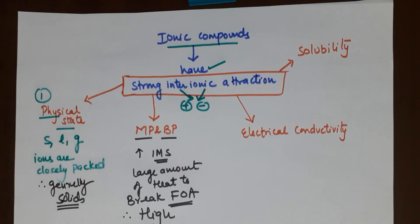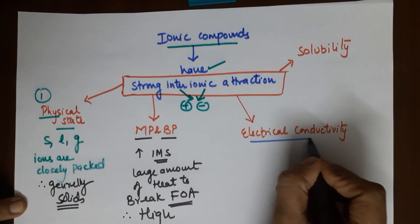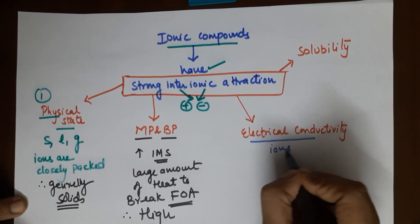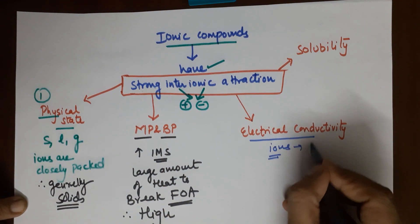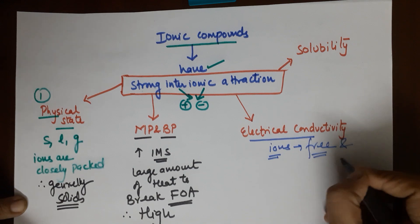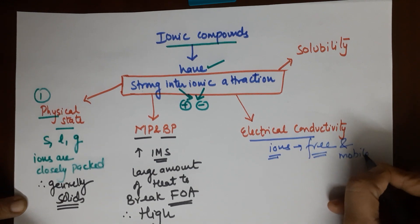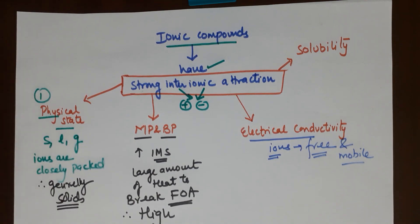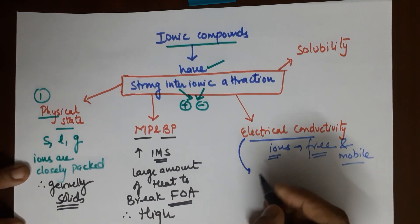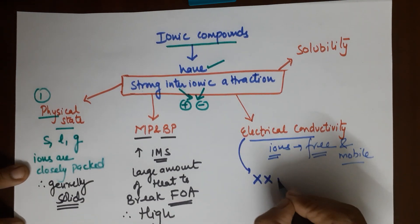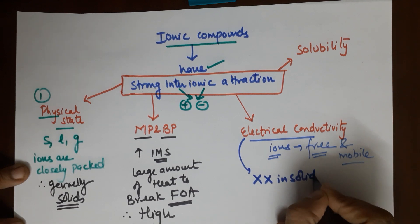The next property is electrical conductivity. When we talk about electrical conductivity, we are talking about ions conducting electricity. Ions we already have in ionic compounds, but the ions should be free and mobile. If the ions are not free and not mobile, they will not be able to conduct electricity. That is why electrical conductivity is not possible in the solid state.